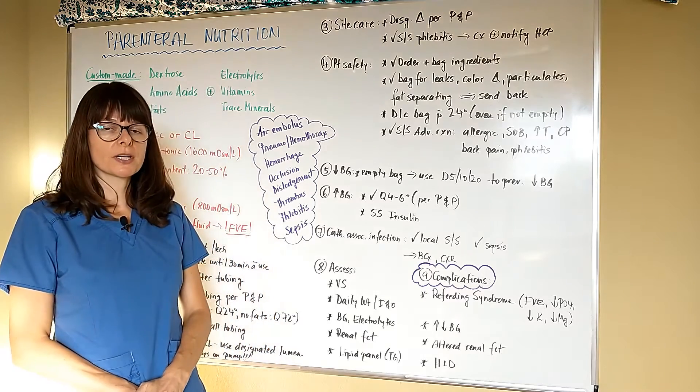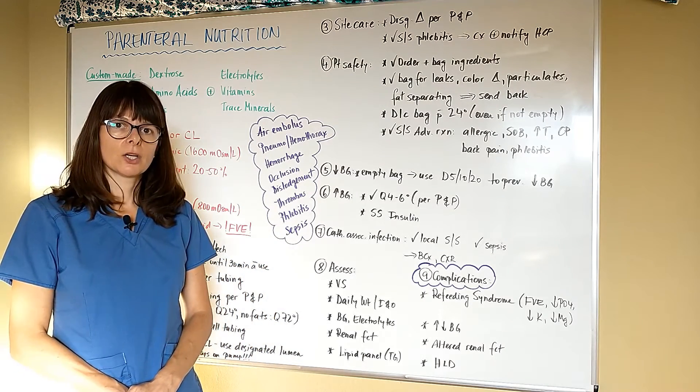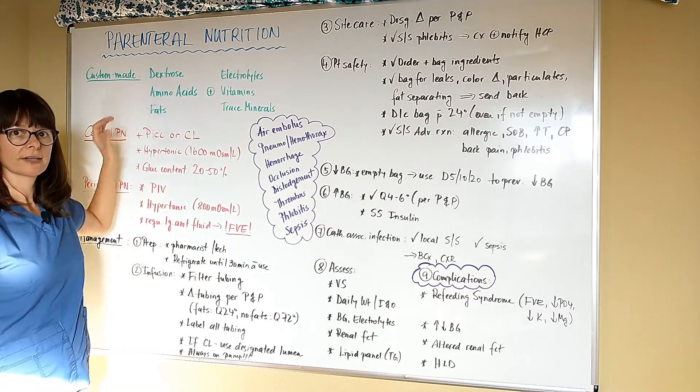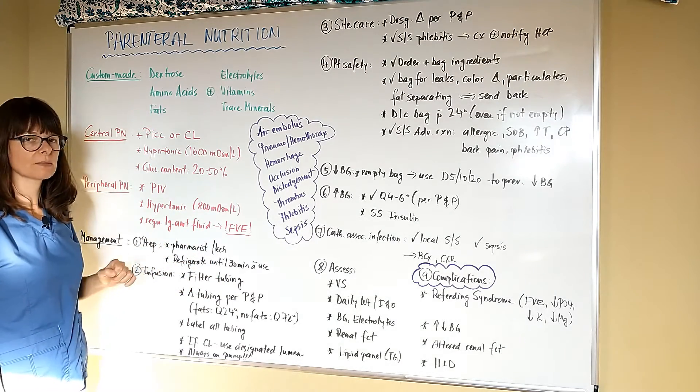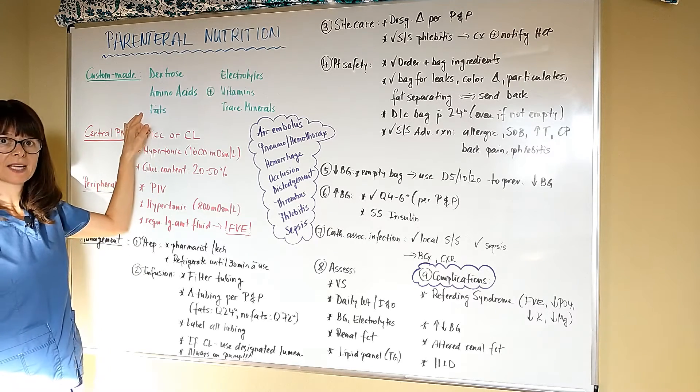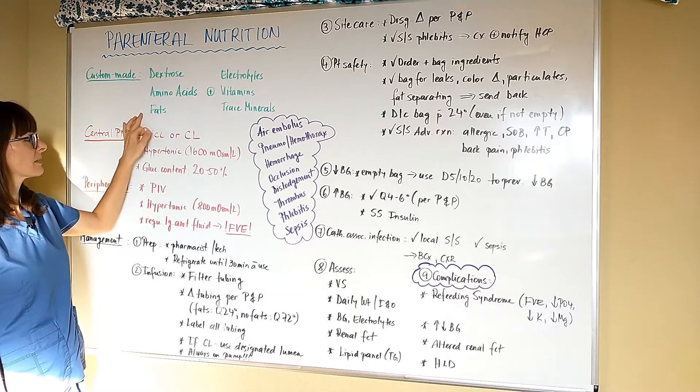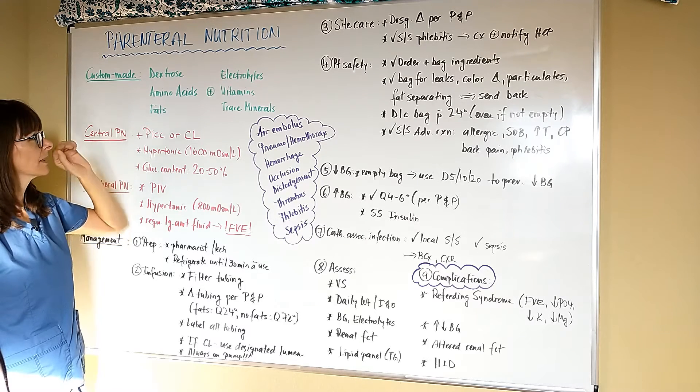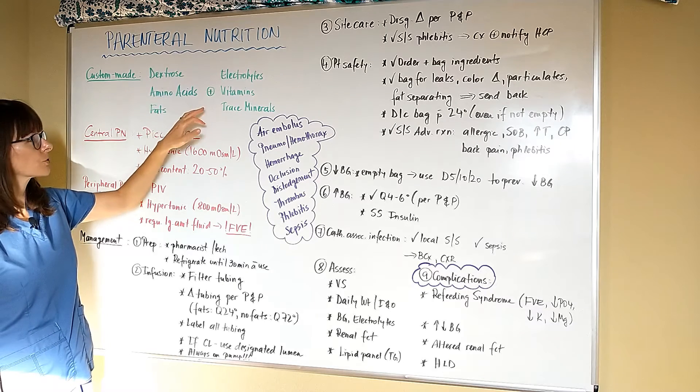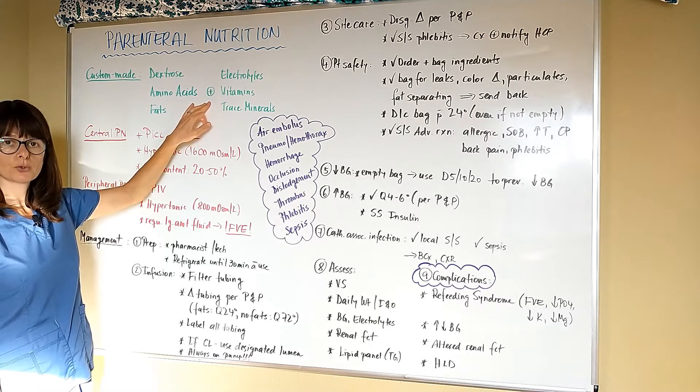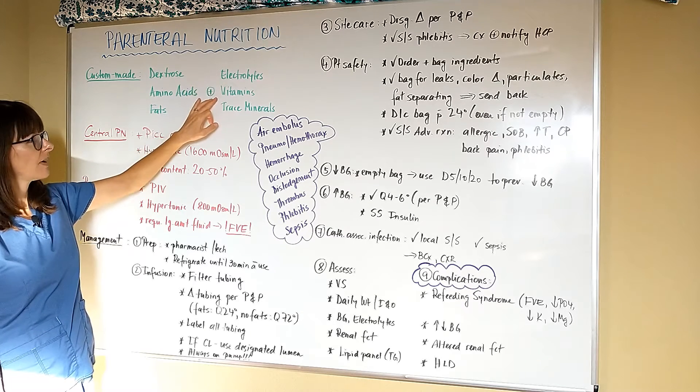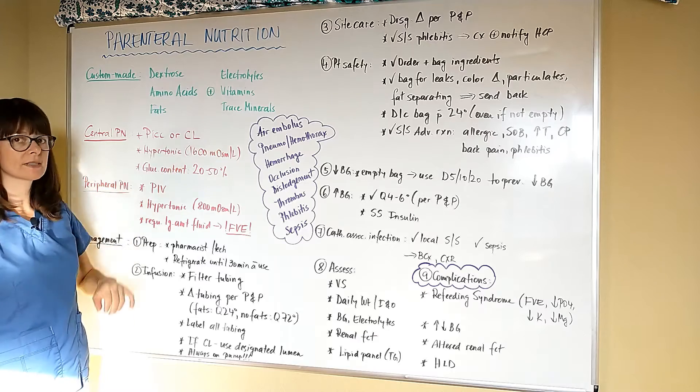Parenteral nutrition is basically consistent of the three basic nutrients that our bodies need to sustain themselves, which is dextrose, amino acids and fats - basically meaning carbohydrates, proteins and lipids or fats. Depending on what the patient's needs and labs show, the pharmacist who usually reconstitutes or mixes these solutions will add electrolytes, vitamins, as well as trace minerals.